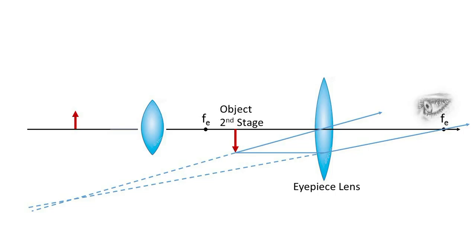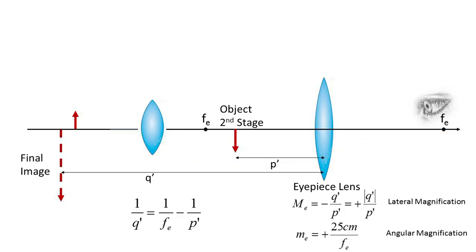Again, we begin the ray trace analysis with a ray parallel to the principal axis that is deflected by the converging eyepiece through the focal point. A ray passing through the middle of the lens is undeflected. An eye peering into the eyepiece will perceive the two rays as having originated from a source well behind the eyepiece and without additional inversion. Still, it was inverted once already in the first stage.